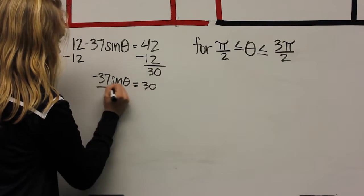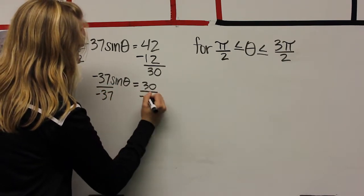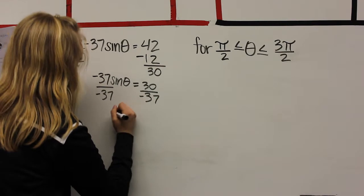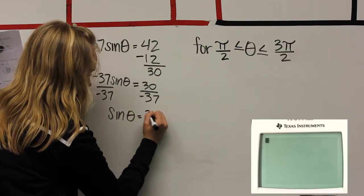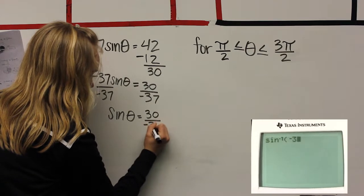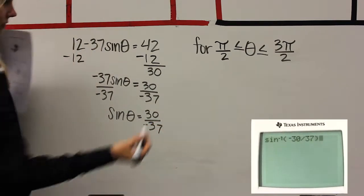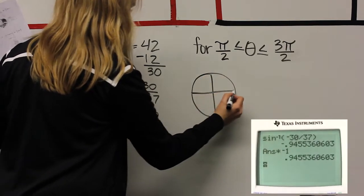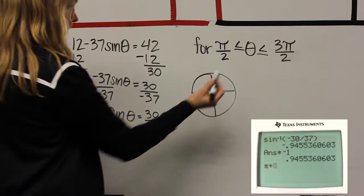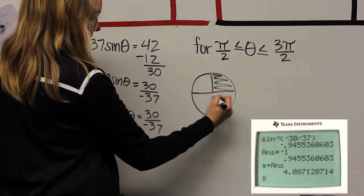For problem D, after you isolate sine, you should get sine equals 30 over negative 37. Once you type the inverse of 30 divided by negative 37 into your calculator, multiply it by negative 1 to make it positive. Then, take this number and add it to pi to make it in the correct domain restriction between pi over 2 and 3 pi over 2. In quadrant 3.